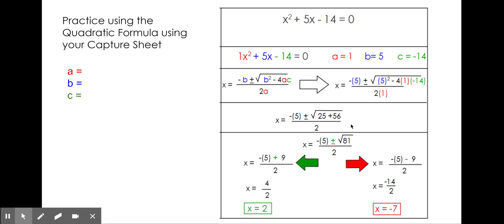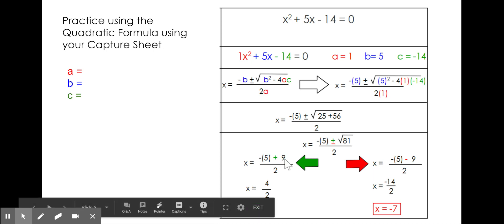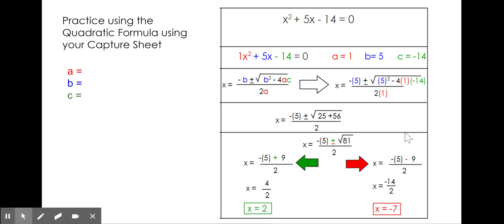So at this point, we can now create two equations to solve for our solutions. We have negative 5 plus 9, which is the square root of 81, divided by 2, and we also have negative 5 minus 9, divided by 2. We simplify those expressions to get our final answers of x equals 2 and x equals negative 7.